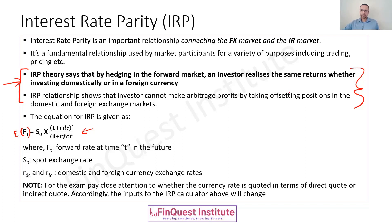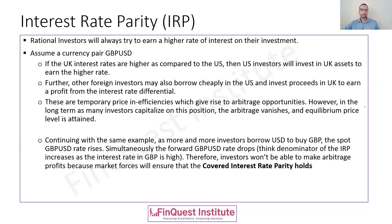Now let's try to understand these two points in a better manner through examples, so that it brings further clarity to the idea. When we talk of rational investors, they will always try their best to earn a higher interest rate. Any sensible and rational investor would like to earn a higher return on the funds which they invested.